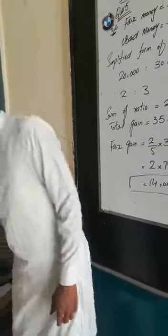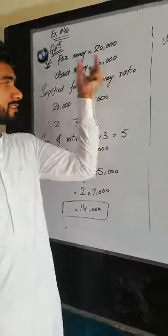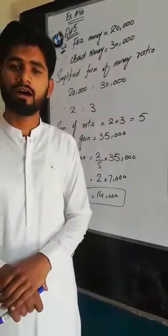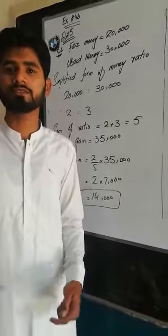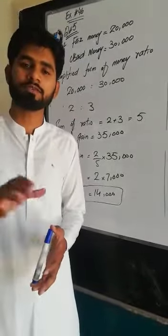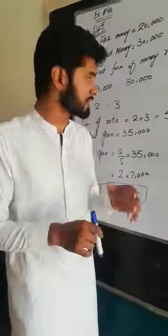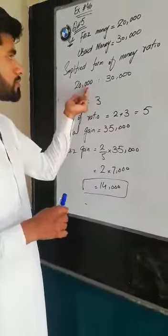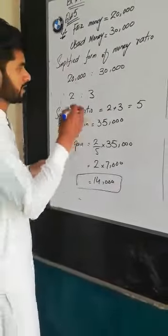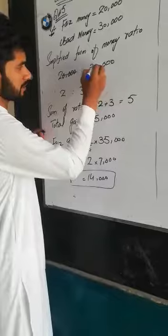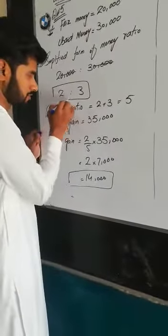Faiz and Ubaid respectively — one of them has 20,000 rupees invested and one of them has 30,000 rupees invested. The ratio of 20,000 to 30,000, simplified by dividing by 10,000, gives the simplest form of the ratio: 2 to 3.